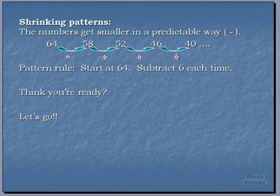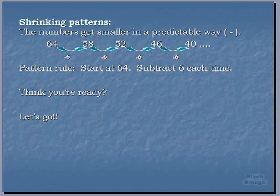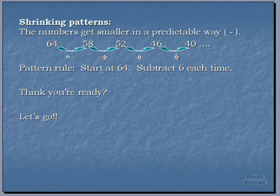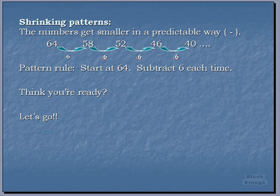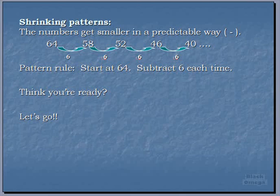So here we are with the pattern 64, 58, 52, 46, 40. So like the word says, shrinking, it gets smaller and it gets smaller because we subtract 6 every time. So if you had to guess at the next term in this pattern from the number 40, if we subtract the 6, we get 34.